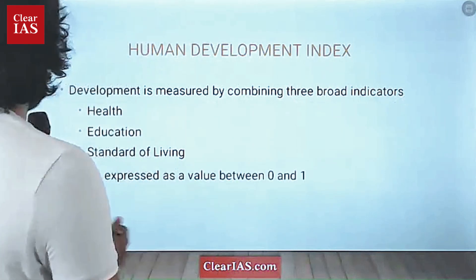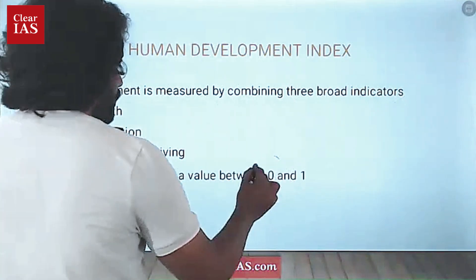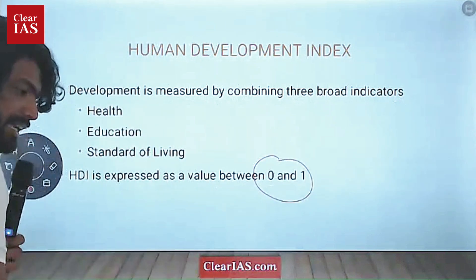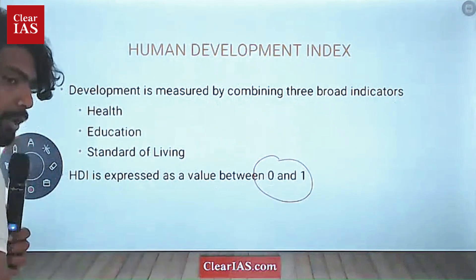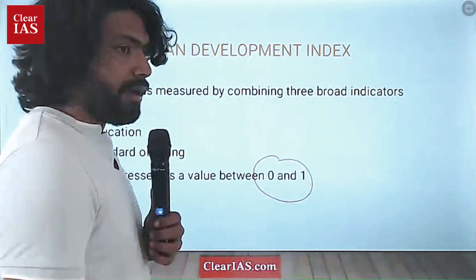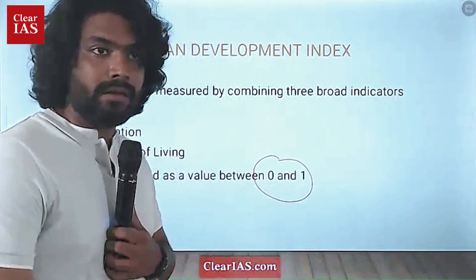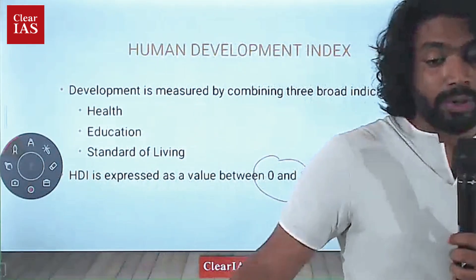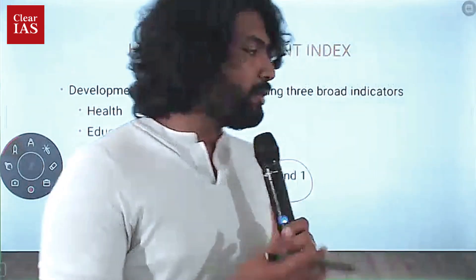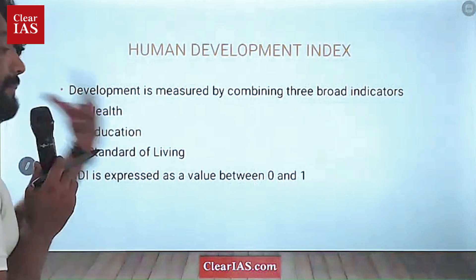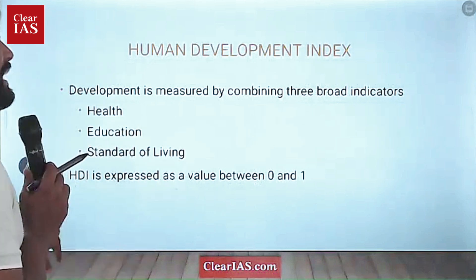HDI is actually expressed as a value between 0 and 1 — similar to the Gini coefficient between 0 and 1. Human development increases along this scale: 0 means there is zero human development, while 1 means a very good quality of human development in that nation. We have to discuss what are the parameters or indicators.